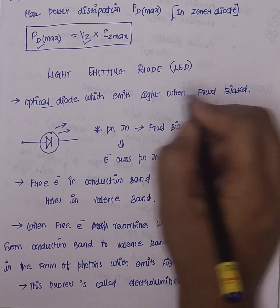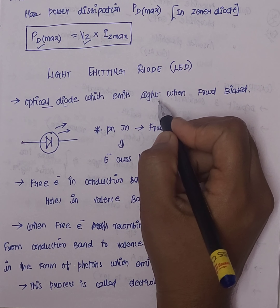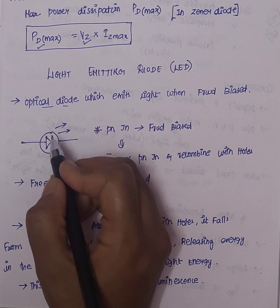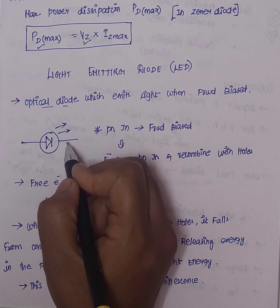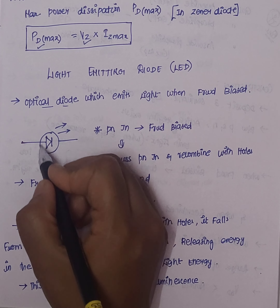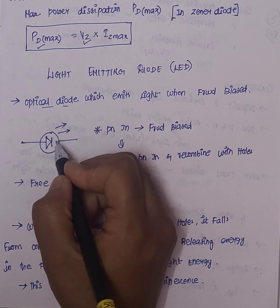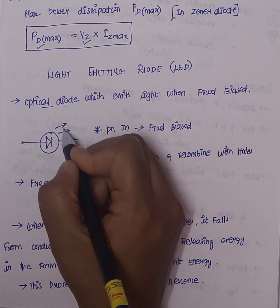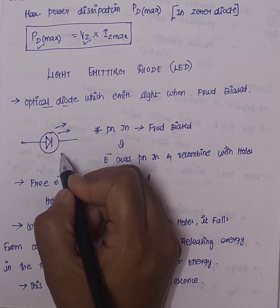When we look at this diode, we see it emits light. This is the symbol of the diode. We have an anode and cathode, and there is a light emission from this diode.